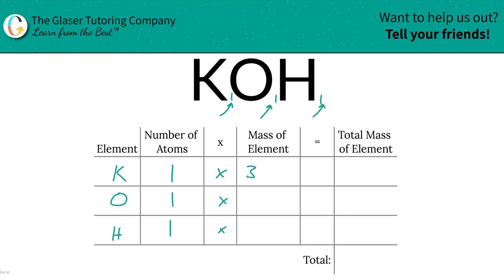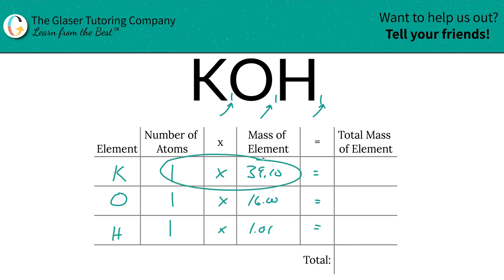So this is 39.10, oxygen was 16, and hydrogen was 1.01. Then we're going to find the total mass of the element in the compound by simply multiplying across each element. So that's going to be 39.10, 16 for oxygen, 1.01. It's the same as all the masses, but that's only because there's only one atom of each.